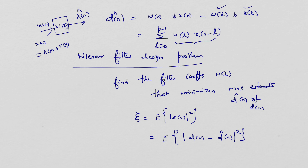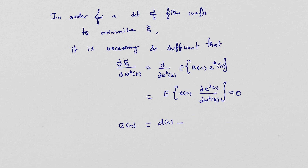The Wiener filter design problem requires that we determine the filter coefficients w(k), for k equal to zero, one, two, up to p minus one, which minimize the mean squared error. The designed filter coefficients must produce the minimum mean squared error — in the sense that it gives the closest estimate. The minimum mean squared error is the expectation of the squared value of d(n) minus d-hat(n).